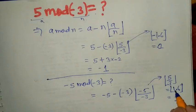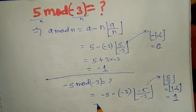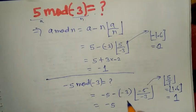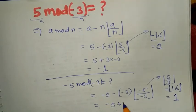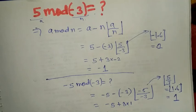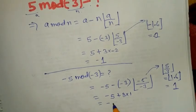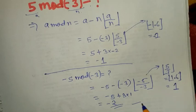So minus 5 plus 3 into 1, which is equal to minus 2.